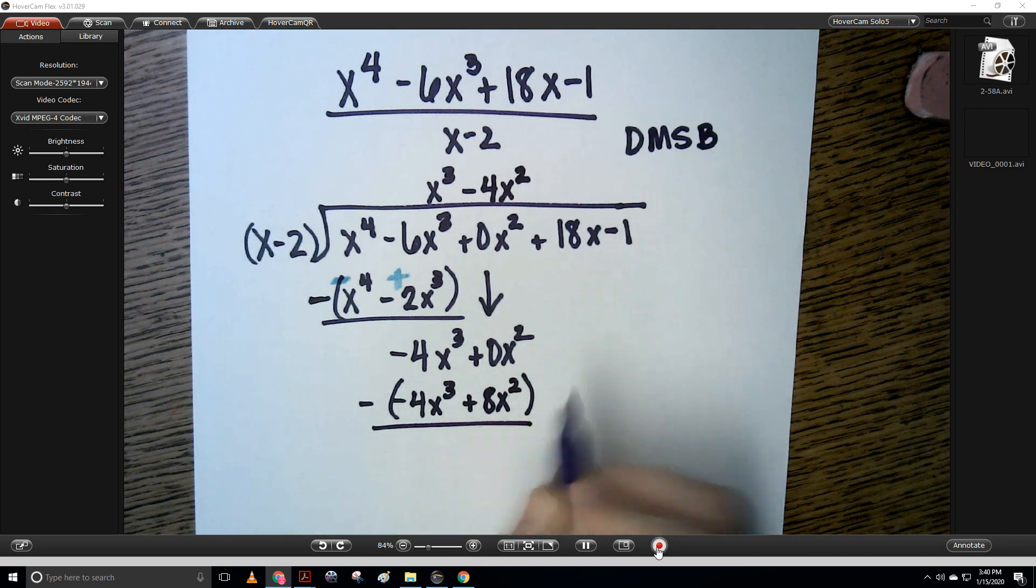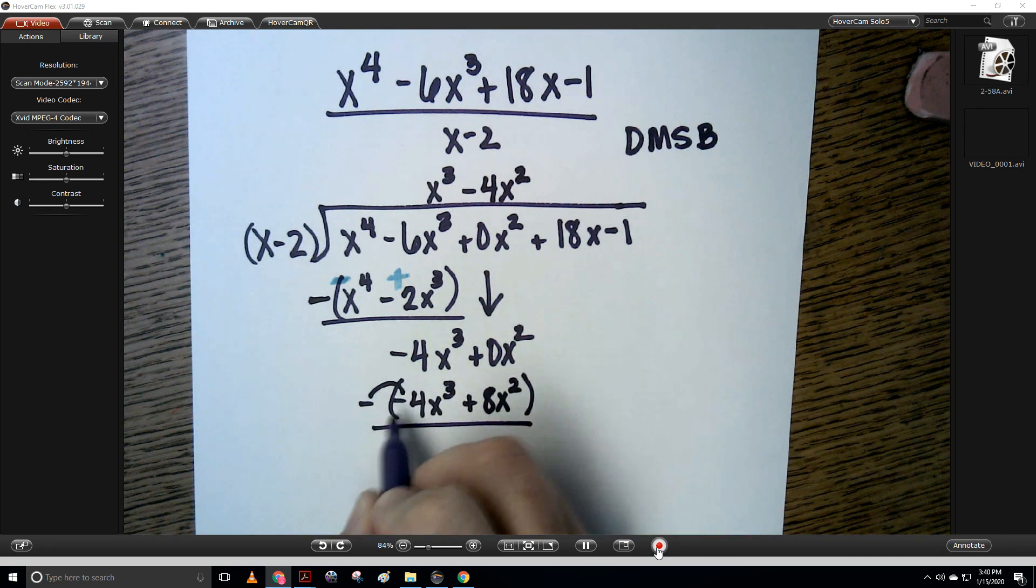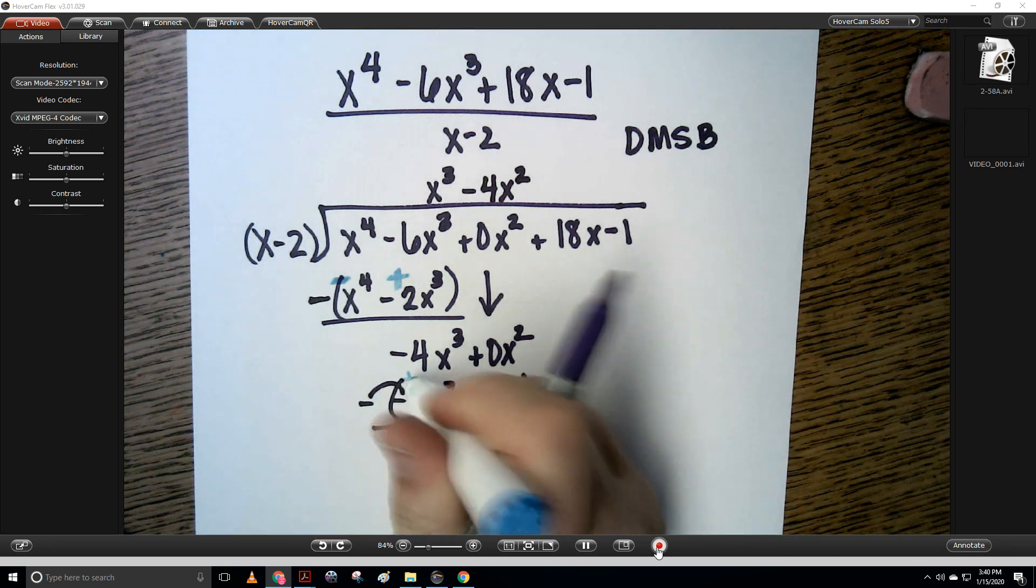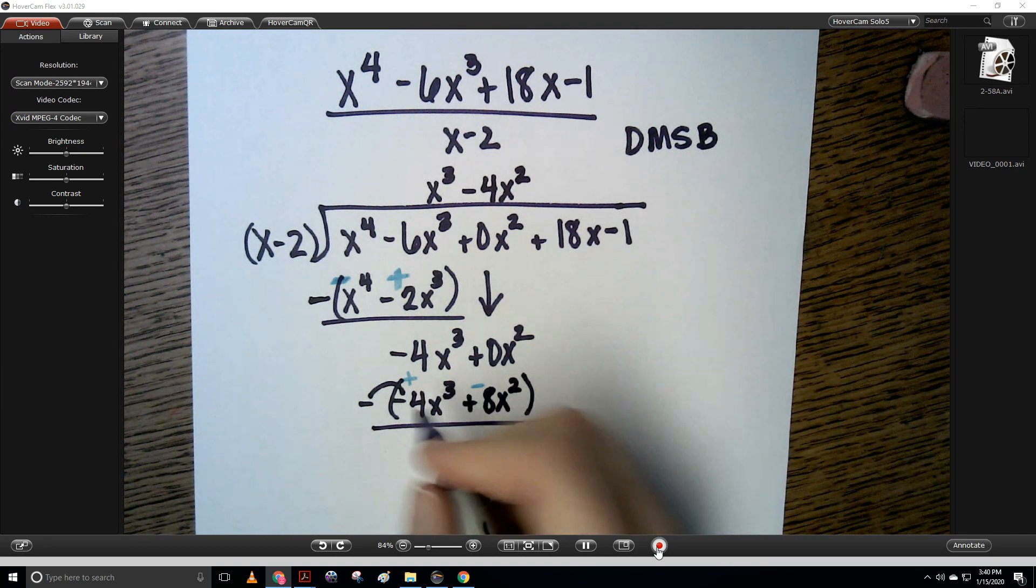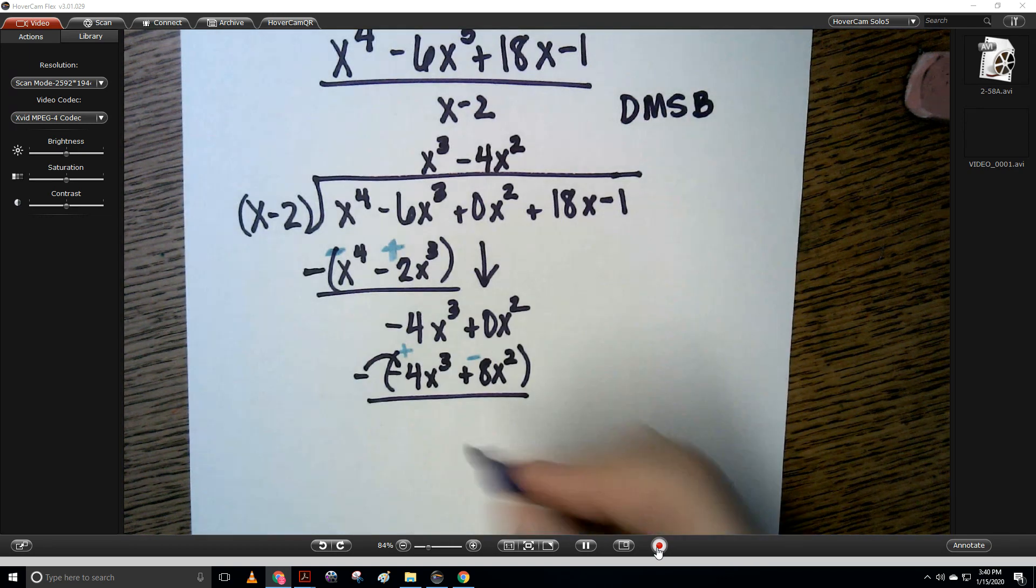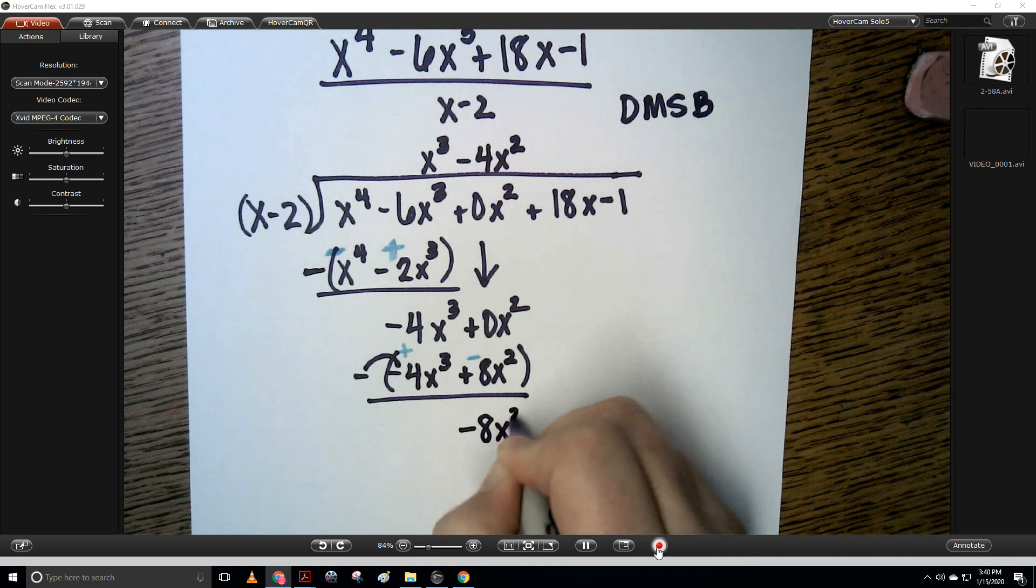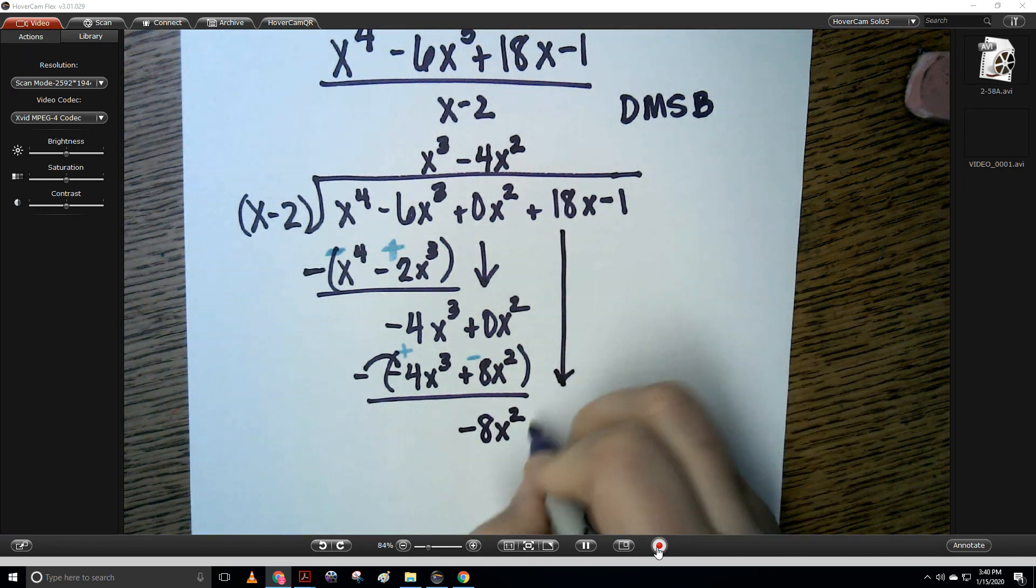And then we have to subtract. When we subtract, that becomes a plus, and this becomes a minus. So we've got this that cancels out, and we've got a negative 8x squared. And then I'm going to bring down my 18x.